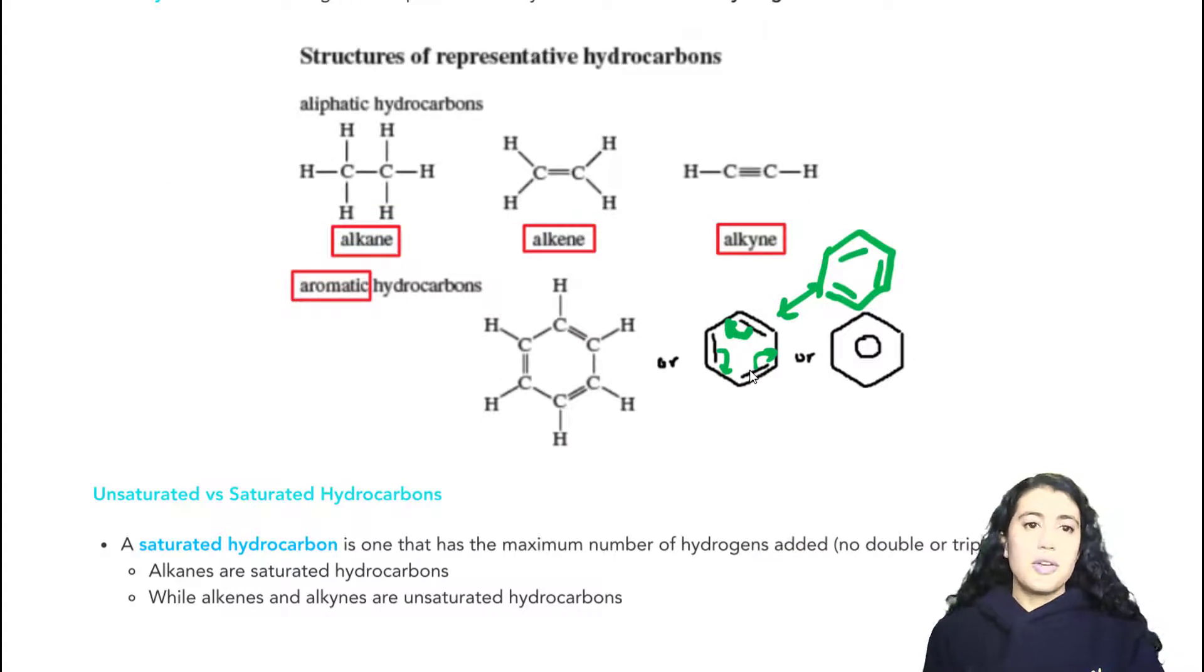Another set of terms for us to go over is unsaturated versus saturated. So all you have to know is saturated just means the maximum amount of hydrogens. So out of an alkane, alkene, and alkyne, which do you think has the maximum amount of hydrogens? Notice that all of these in the diagram are showing with two carbons, and the alkane has the most hydrogens. And as you increase the number of bonds, the hydrogens goes down. So the one with the maximum number of hydrogens is the alkane, and that's why we call the alkane a saturated hydrocarbon.